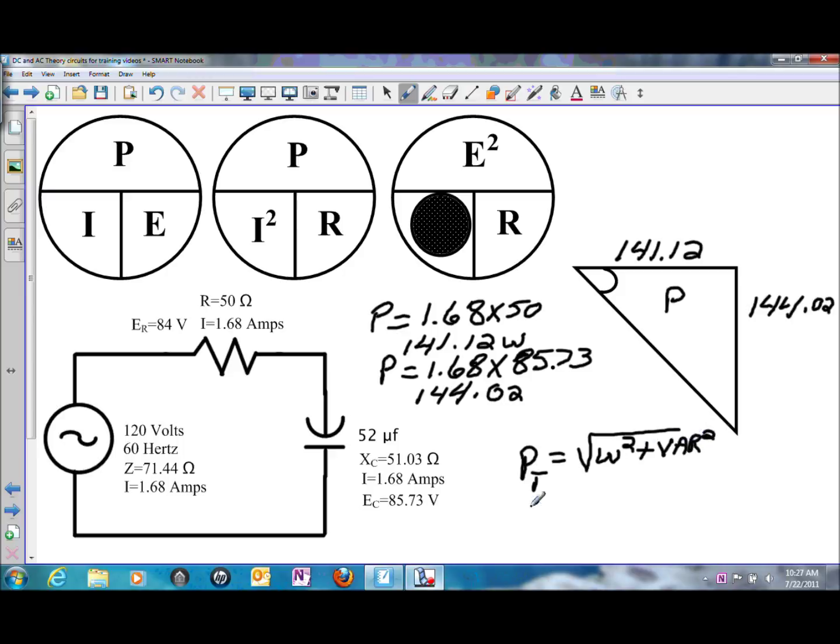And that would give us a power total, or we could once again use our totals. We could use I total times E total and get total power that way. Either way, you're going to end up with approximately 201.6 volt amps for total power.